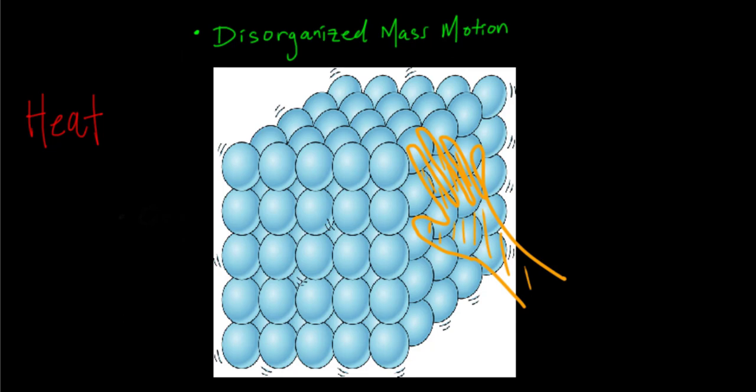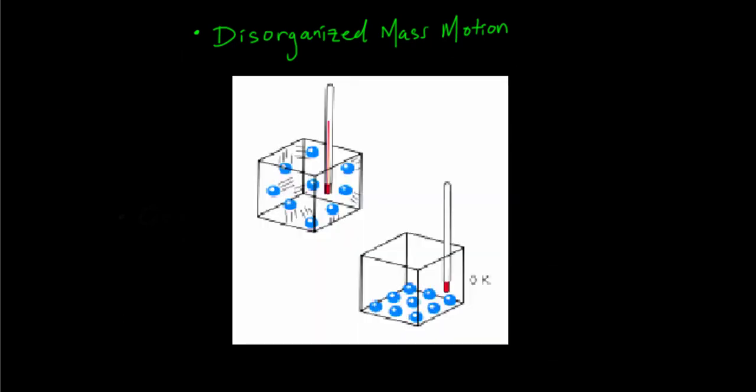If you touch the table in front of you, that temperature you're feeling is you registering how fast those table molecules are vibrating. Let's say they were completely still and weren't vibrating at all. Then the temperature of your table would be the coldest possible temperature in the universe, absolute zero.